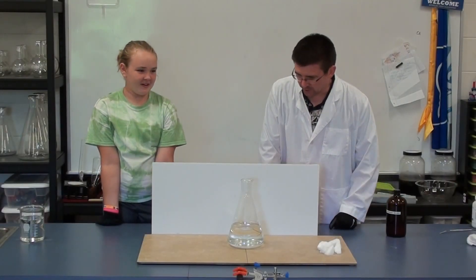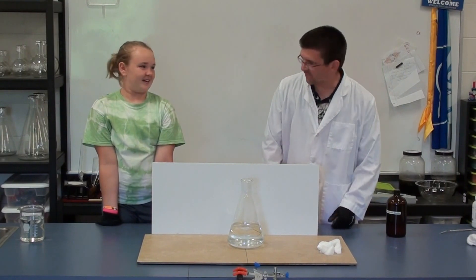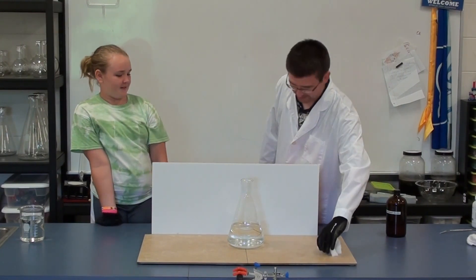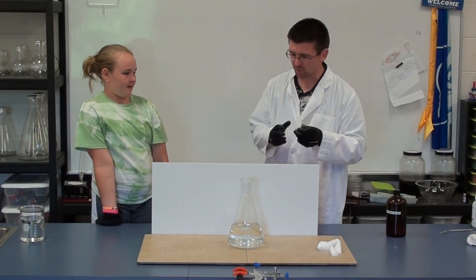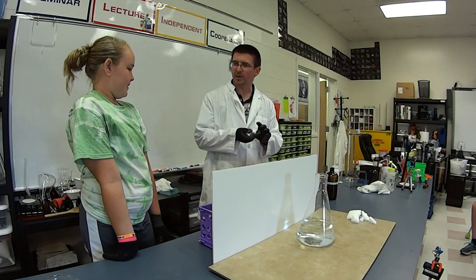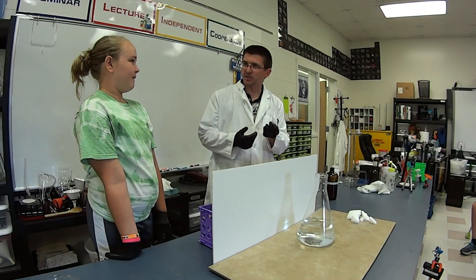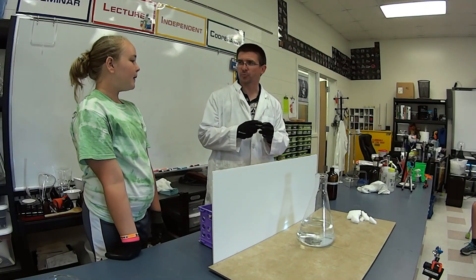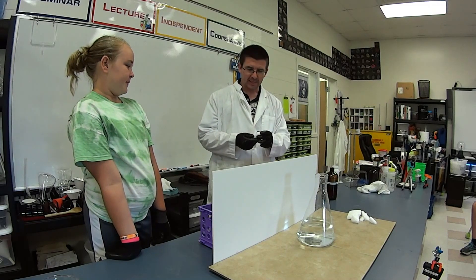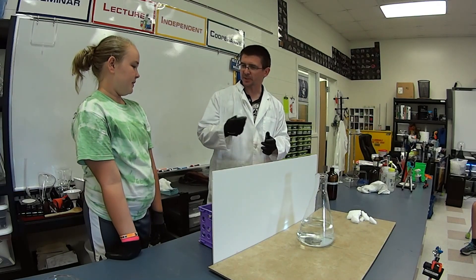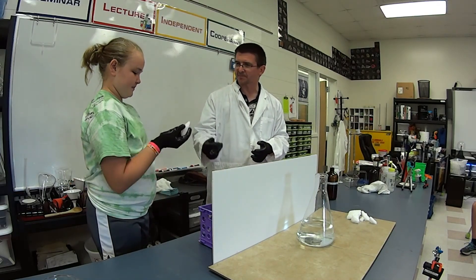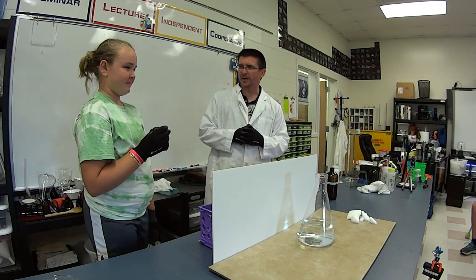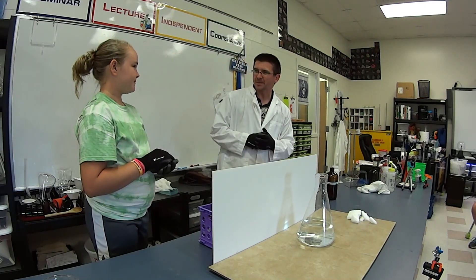Today we're going to look at one of my favorite chemicals to work with: carbon dioxide. The neat thing about carbon dioxide when it gets really cold is that it doesn't change to a liquid — it changes to this solid form called dry ice. We've worked with dry ice a lot in class, and you know it's very cold.